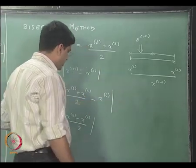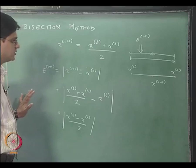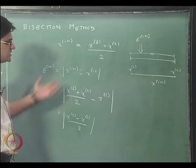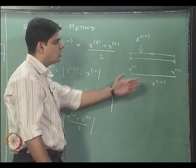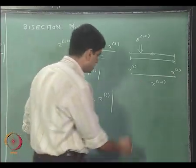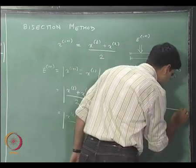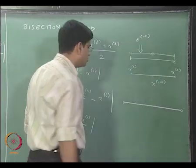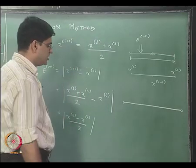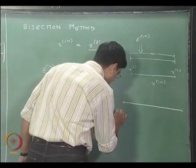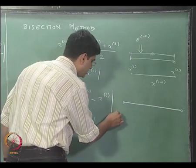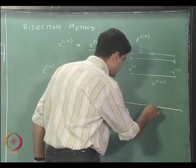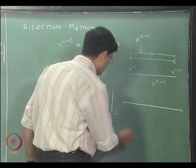Now let us look at where we have started this particular problem. We start by giving two initial guesses which lie on either side of the true solution. This is the entire line segment where we started out with the two initial guesses at the first iteration. We started with x_0 and x_1, and at the first iteration, this is where we got our x_2.